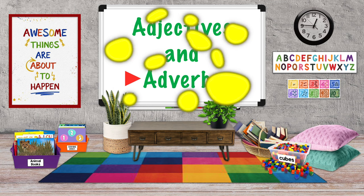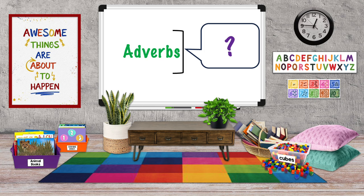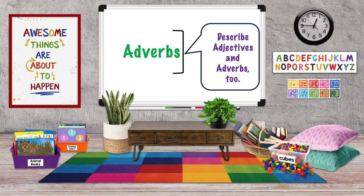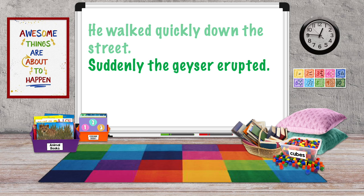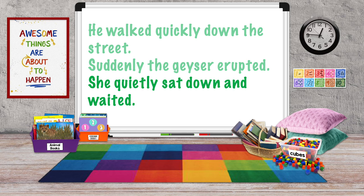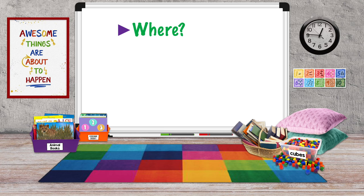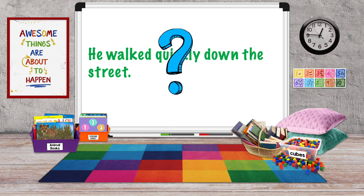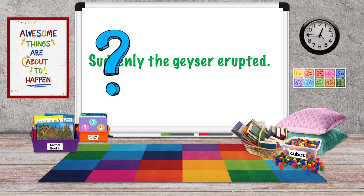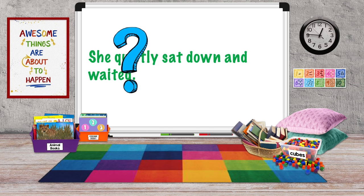The second kind of describing word is an adverb, but adverbs are a little different. Adverbs mostly describe verbs, but adverbs can also describe adjectives or other adverbs. Today we'll just focus on how they describe verbs. Here are some examples: She walked quickly down the street. Suddenly, the geyser erupted. She quietly sat down and waited. Our adverbs are quickly, suddenly, and quietly. A clue that a word is an adverb is that it ends in -ly — that isn't always the case, but it helps. Adverbs answer the questions where, when, why, how, and to what extent or degree. How did she walk? Quickly. How did the geyser erupt? Suddenly. How did she sit down? Quietly.